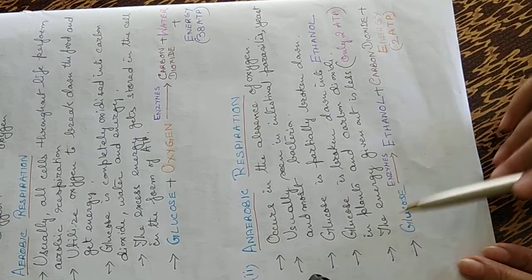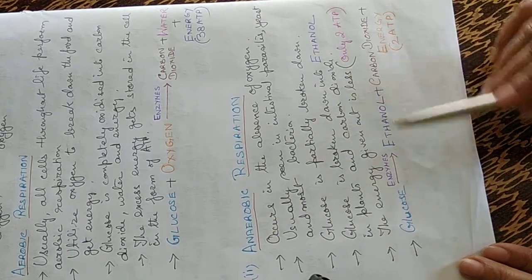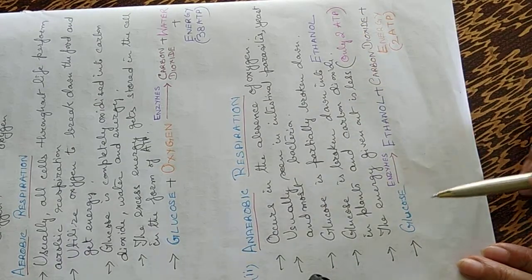Glucose is broken down into ethanol in plants and carbon dioxide is produced. The energy given out is less, that is only two ATPs produced.